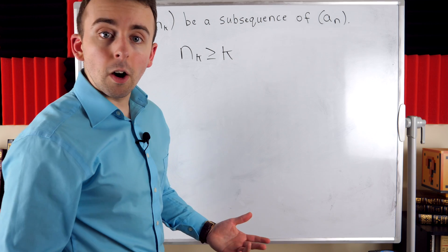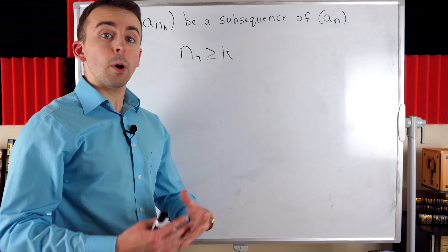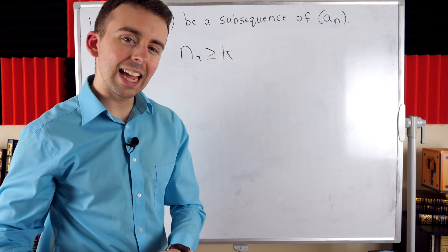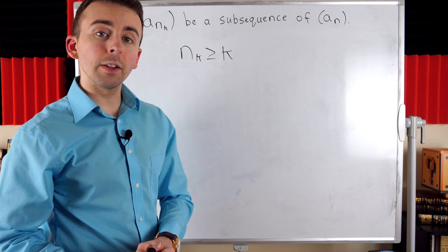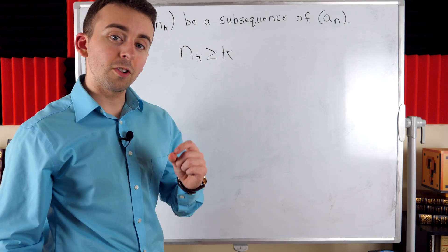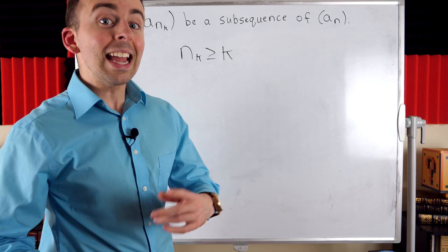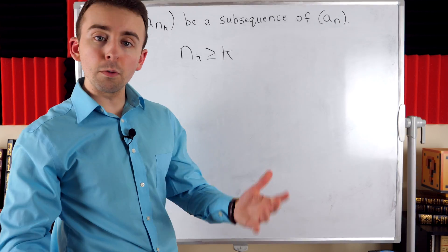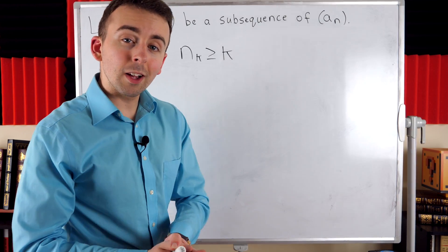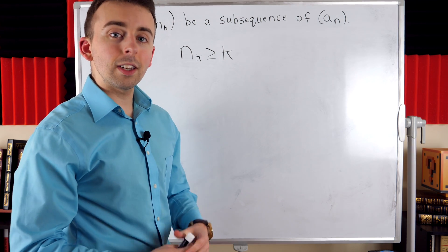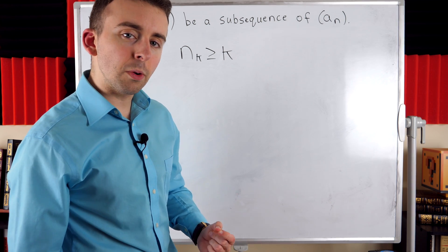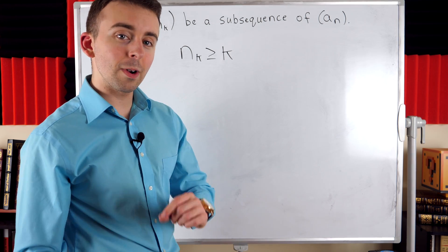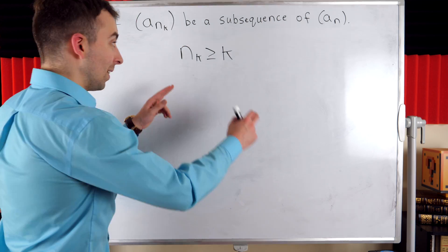I'll assume that you already know what a subsequence is, and perhaps have already seen my lesson proving that a sequence converges to a limit if and only if all of its subsequences also converge to that same limit. We use this result in that proof, and we'll use it again in future proofs. I'll leave links in the description to my lesson introducing subsequences and my lesson doing that proof.